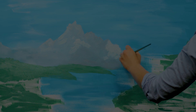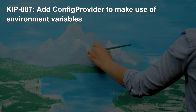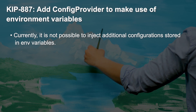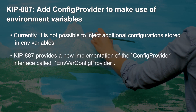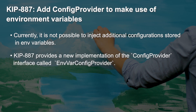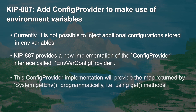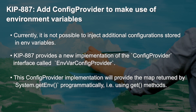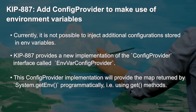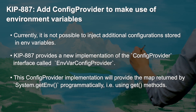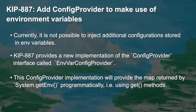Finally, for Kafka Core updates, we have KIP 887. It's not currently possible to inject additional custom configurations stored in environment variables. So KIP 887 provides a new implementation of the config provider interface called EnvVar config provider. This new config provider implementation gets around this injection issue by programmatically providing the map returned by System.getenv.